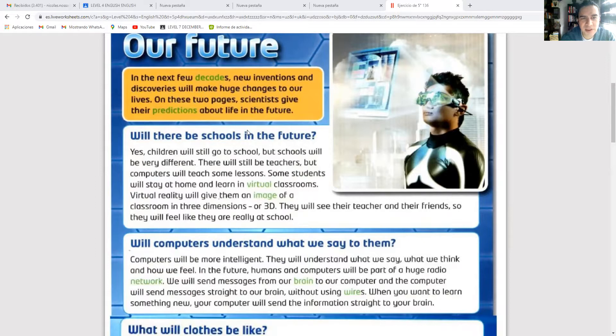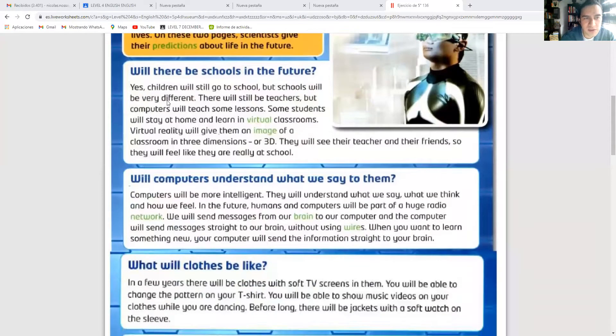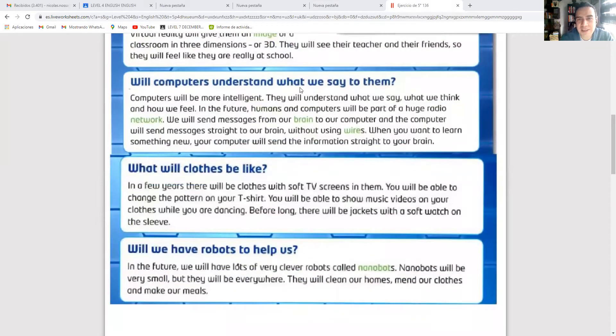Reading: Read this text about life in the few decades. Our future: in the next few decades, new inventions and discoveries will make huge changes to our lives. On these two pages, scientists give their predictions about life in the future. Will there be schools in the future? Yes, children will still go to school but schools will be very different. There will still be teachers but computers will teach some lessons. Some students will stay at home and learn in virtual classrooms.